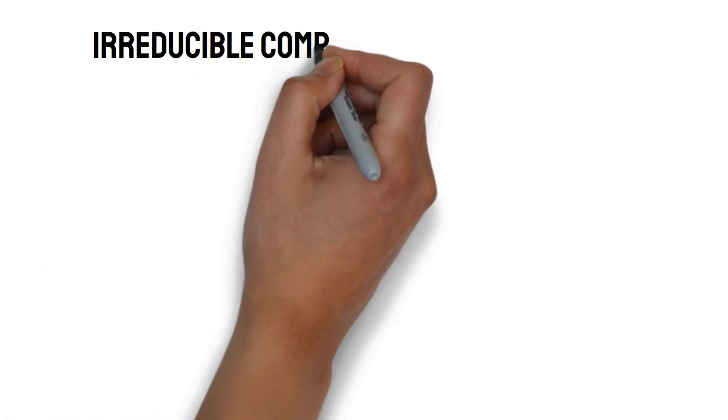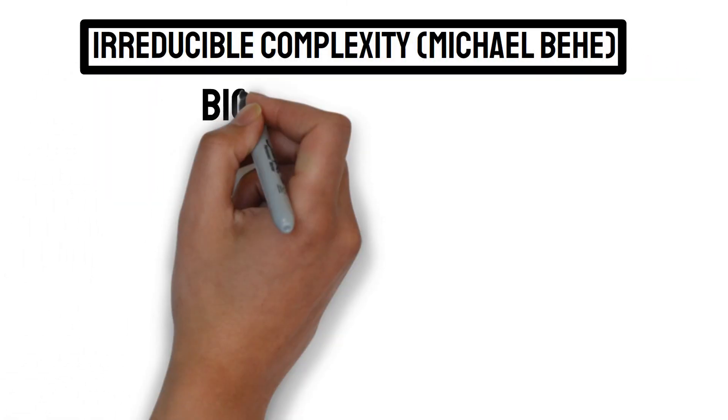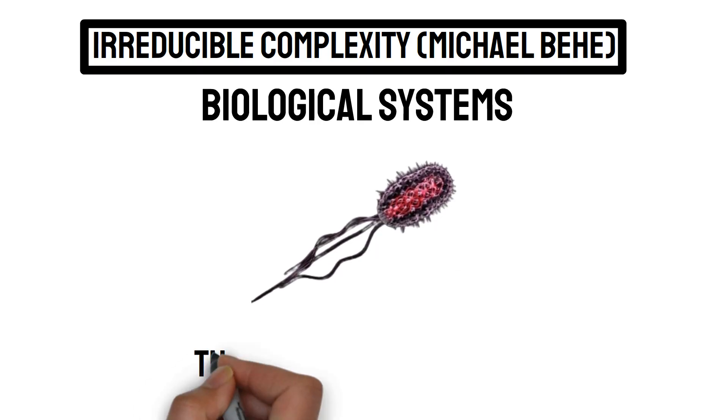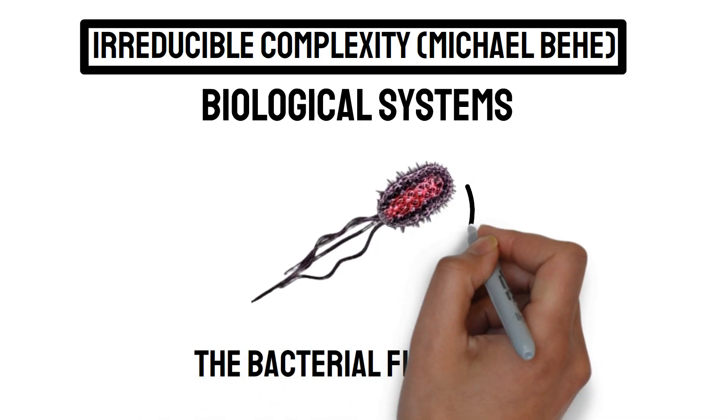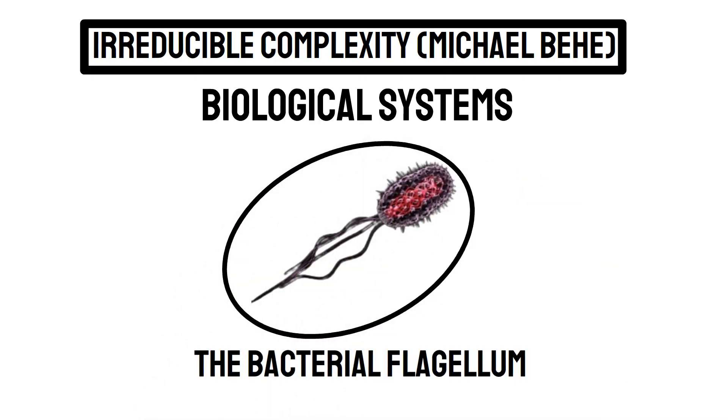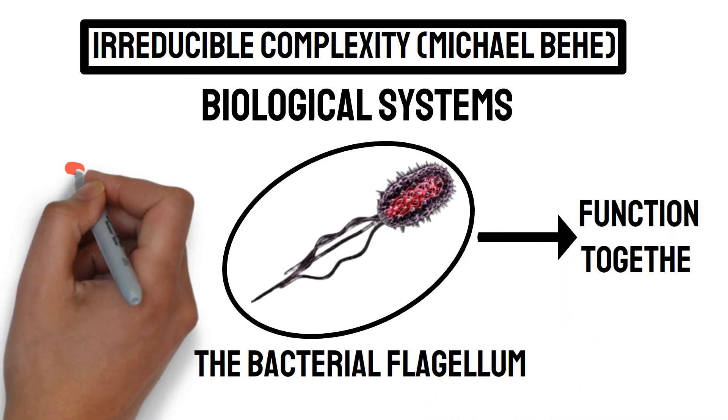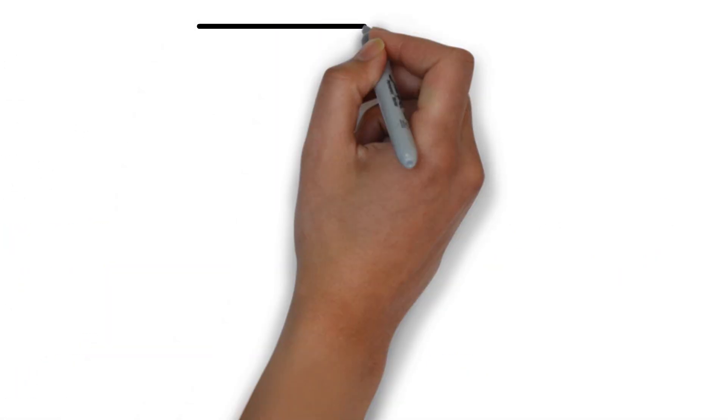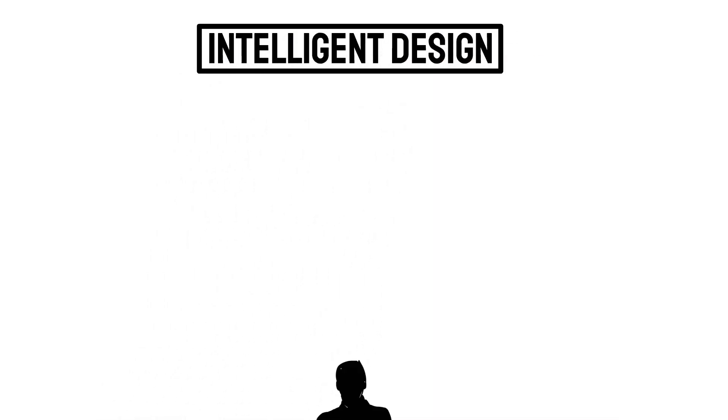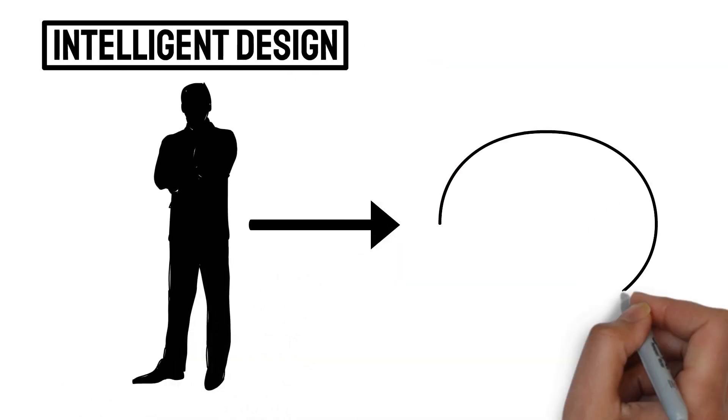Then there's irreducible complexity. Certain biological systems, such as the bacterial flagellum, exhibit irreducible complexity, meaning that all parts must function together or the system would fail. This complexity points to intelligent design, as it is unlikely to have arisen from random mutations alone.